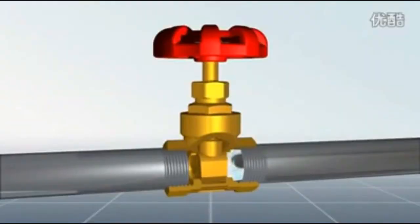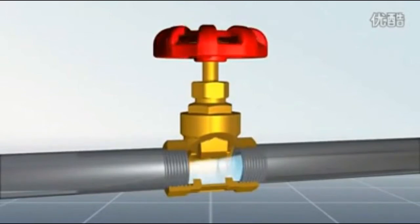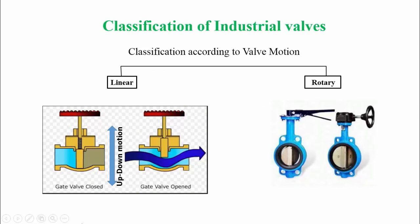For better understanding, please look at this animation. When the stem goes up, the fluid starts flowing. And another type is rotary — rotary means movement in a circular path about a fixed point, called the axis of rotation. Please look at this picture very carefully. This butterfly valve's movement is the best example of a rotary type valve.